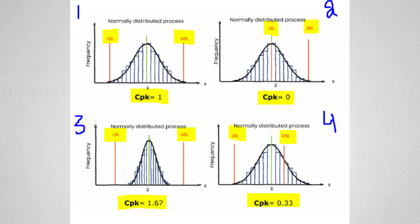Now let's look at graphs showing how CPK performs at different values. If you can see on your screen, there are four different graphs for CPK. The first graph shows CPK equal to 1, where the upper and lower specification limits are almost touching the distribution. In the second example, CPK is 0 because the location has shifted tremendously.